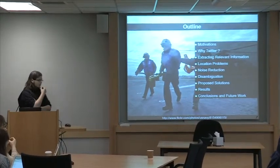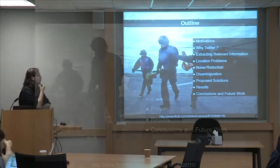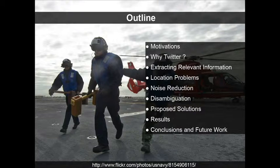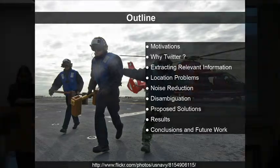The outline of the presentation covers: motivations of the project, why we chose Twitter as our social network, how to extract relevant information from tweets, the location problems we found when we started the project, noise reduction and disambiguation — explaining these problems and the proposed solutions — preliminary results, conclusions and future work.